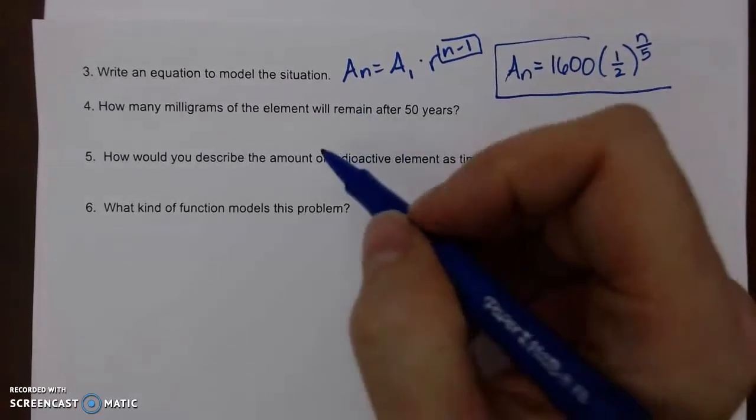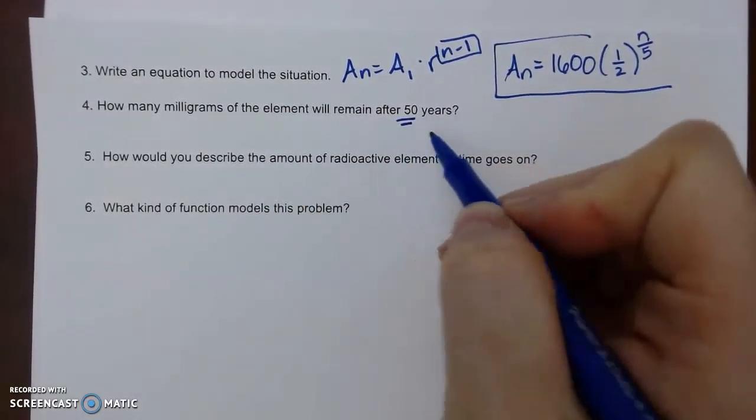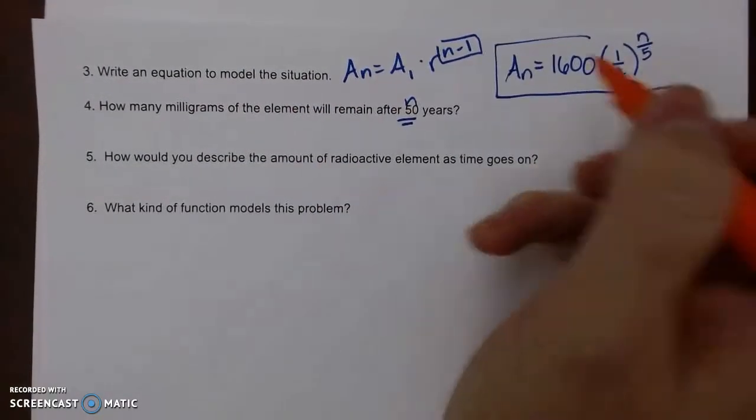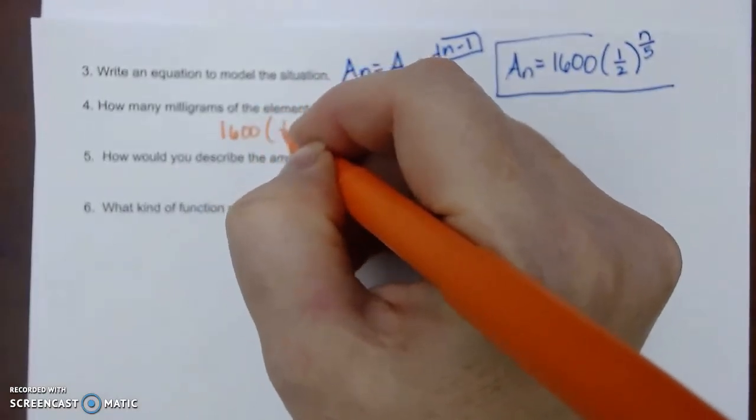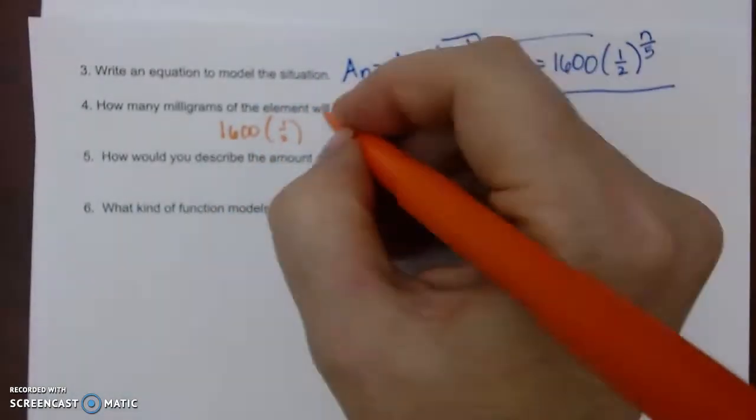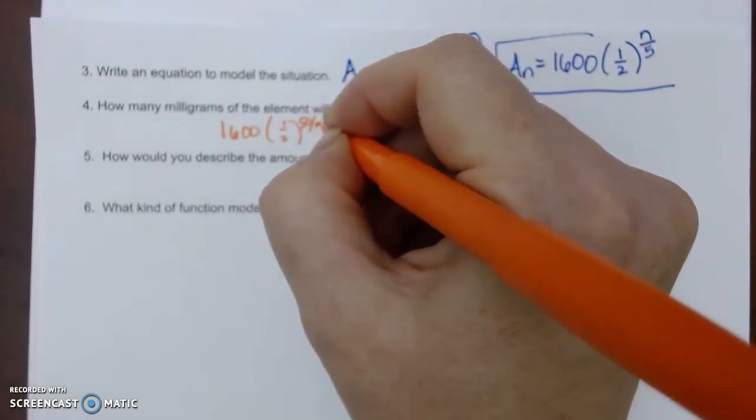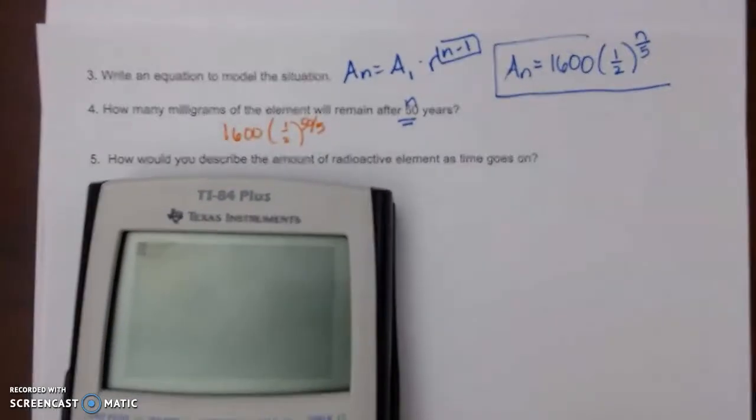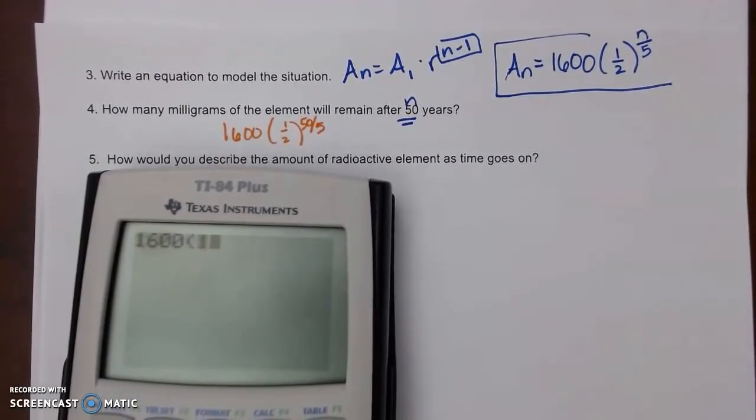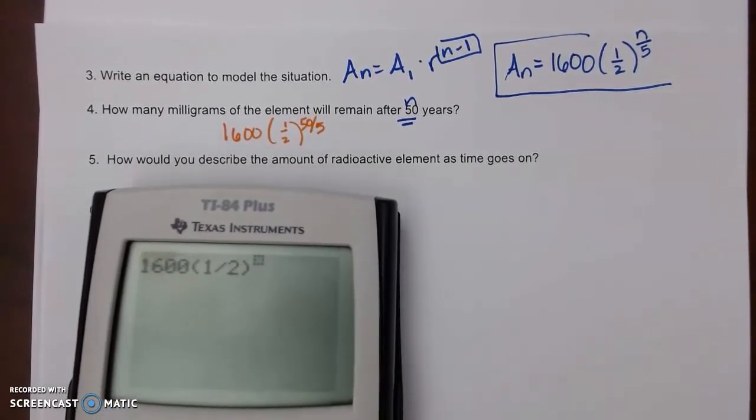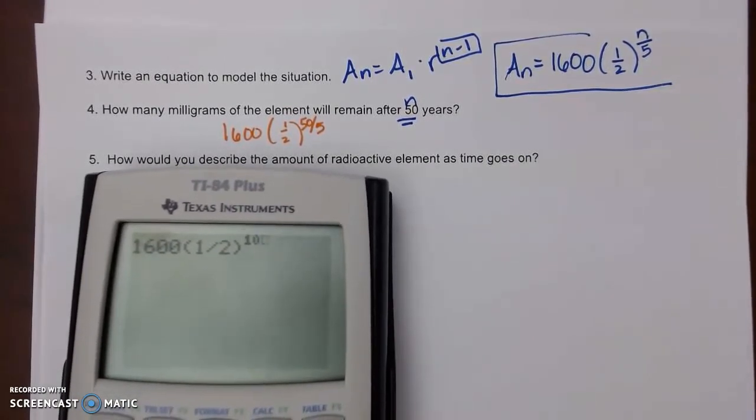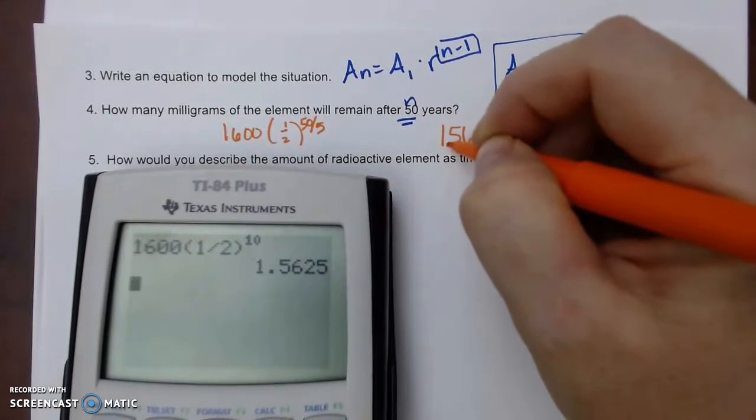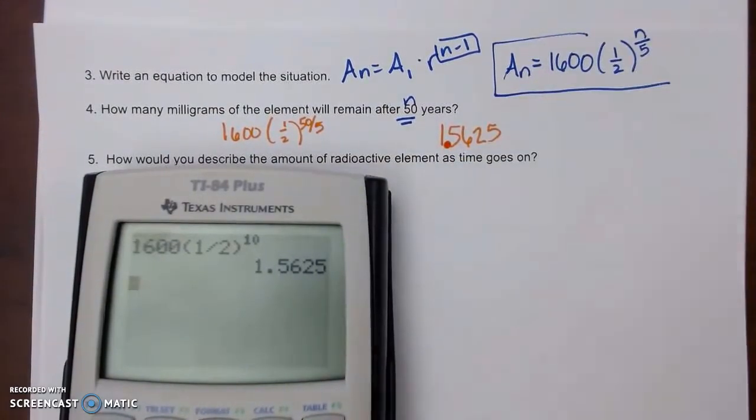How many milligrams of the element will remain after 50 years? So I could either continue my pattern or I can just substitute. I've got 1600, one-half, and then we've got 50 divided by five. If we type that into a calculator, 50 divided by five is 10. 1.5625 milligrams.